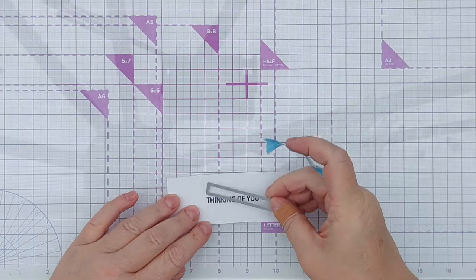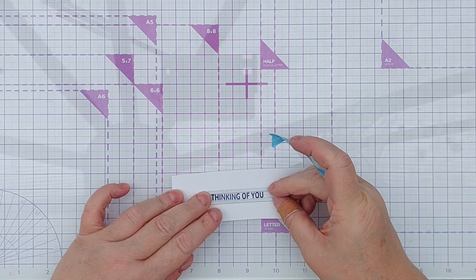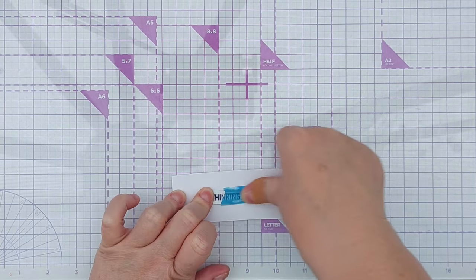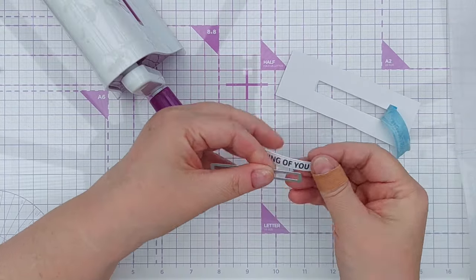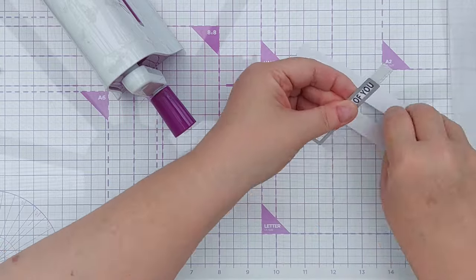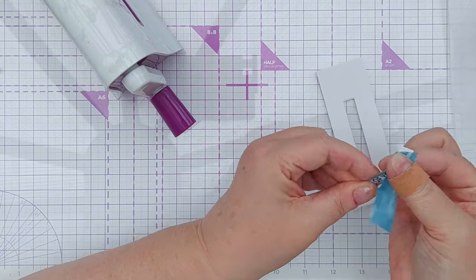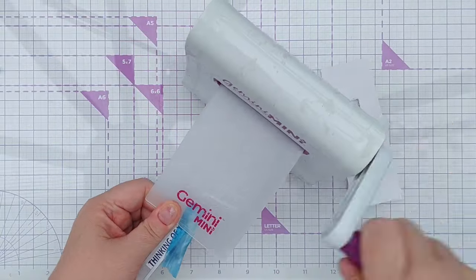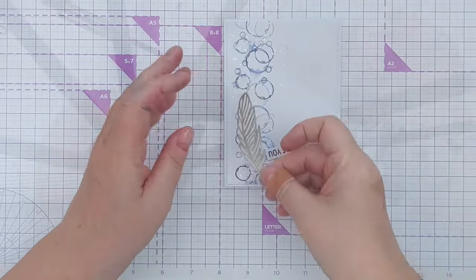And I've got a stitched rectangle die that I'm going to use to die cut this. So I'll get it lined up and hold it in place with some washi. And this is obviously a little bit long. So I'm going to line it up. Hold it in place. And then just die cut the end there.